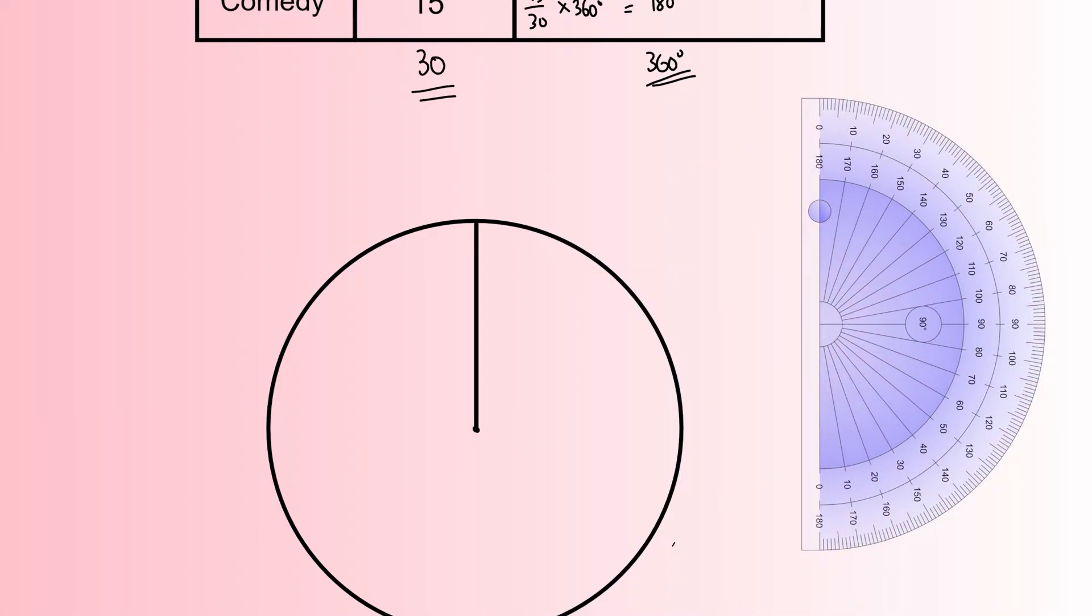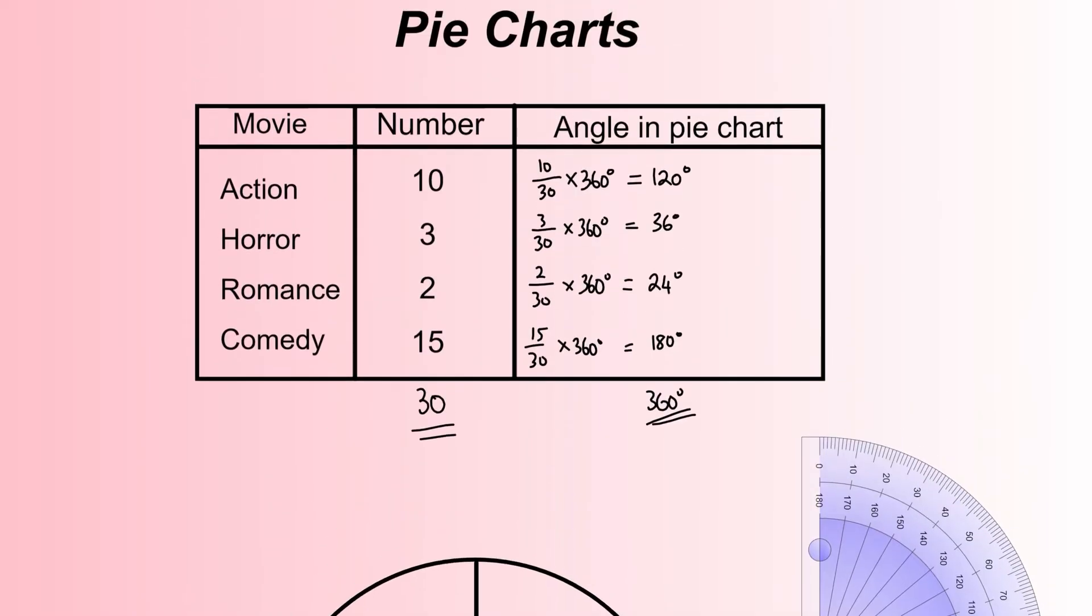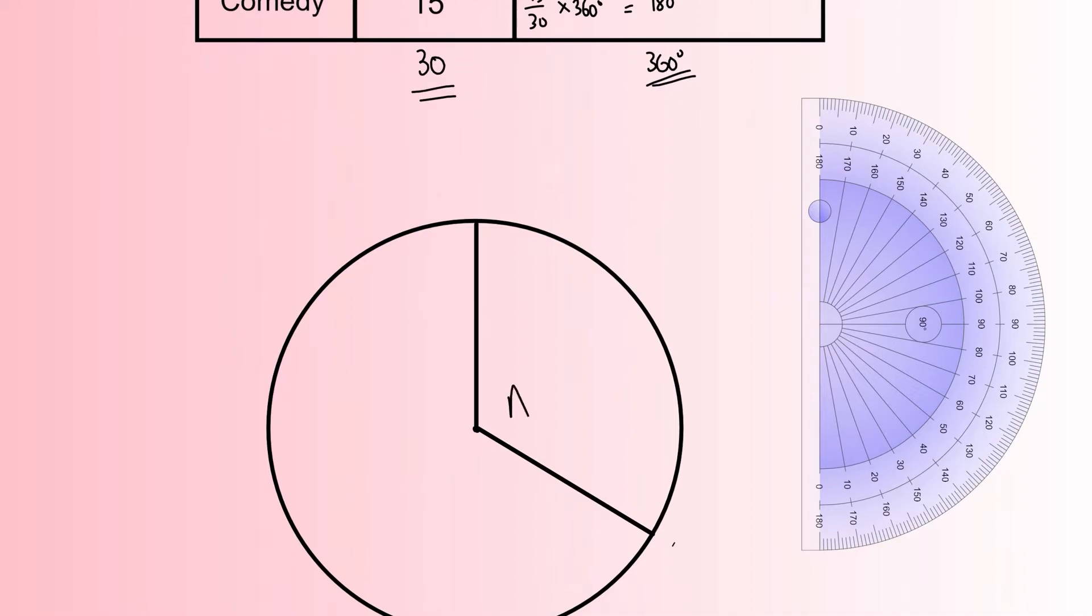Once I've made that little mark, I'm going to take my protractor away and see our mark still there. I'm going to join it up using a straight line tool and bring that back in. That looks to be 120 degrees there, and we'll label that section Action. That was our Action section.